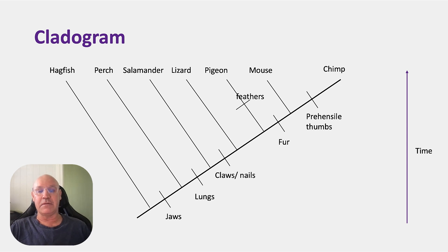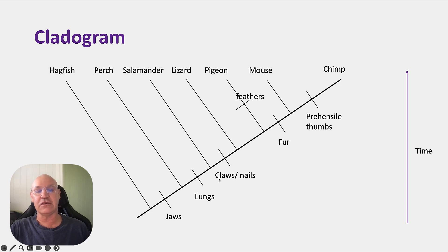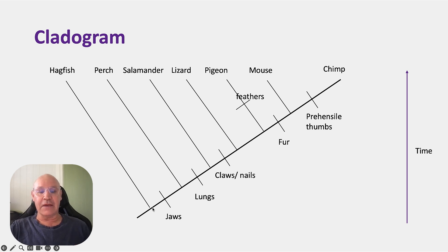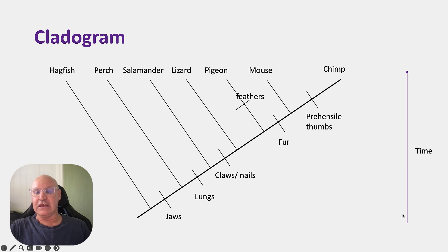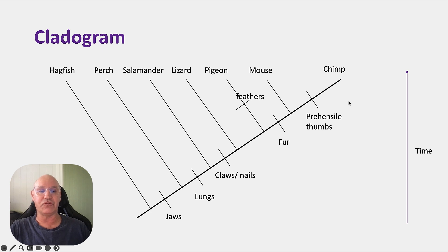There are several ways that cladograms can be drawn. In this representation, all of the lines are generally of the same length, and you have branches coming off the main line. Time is represented vertically, so as you go up the diagram, things are more recent from an evolutionary point of view.